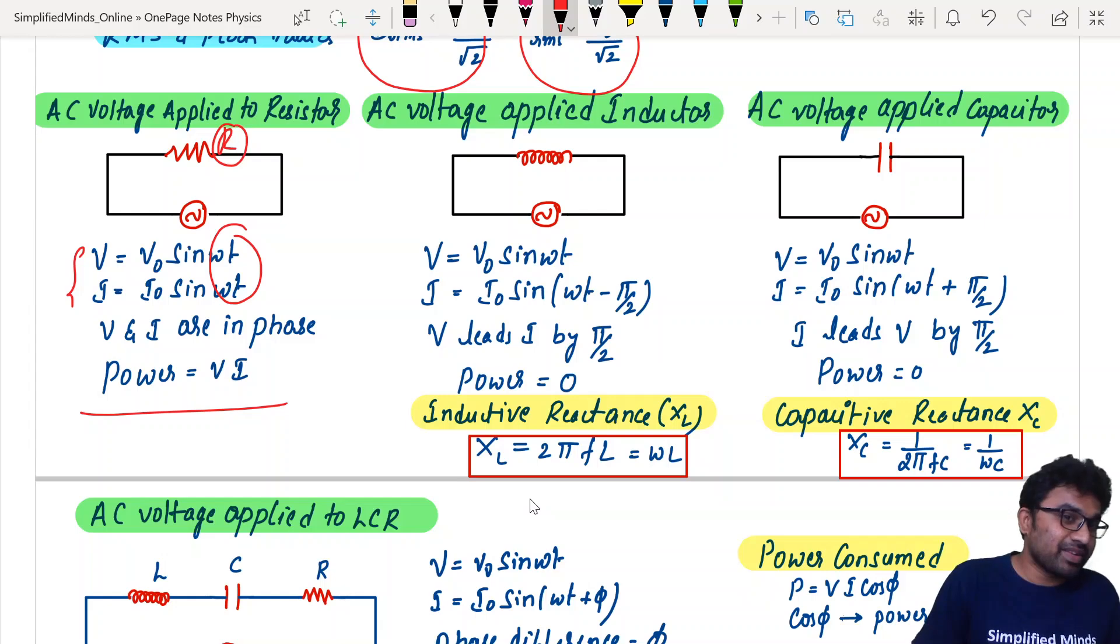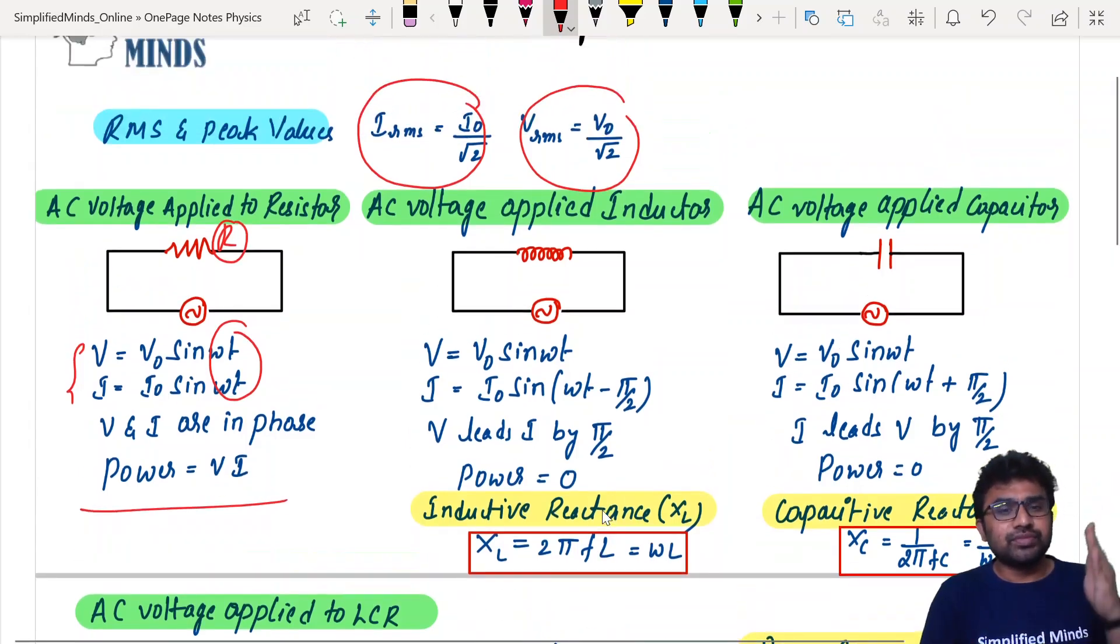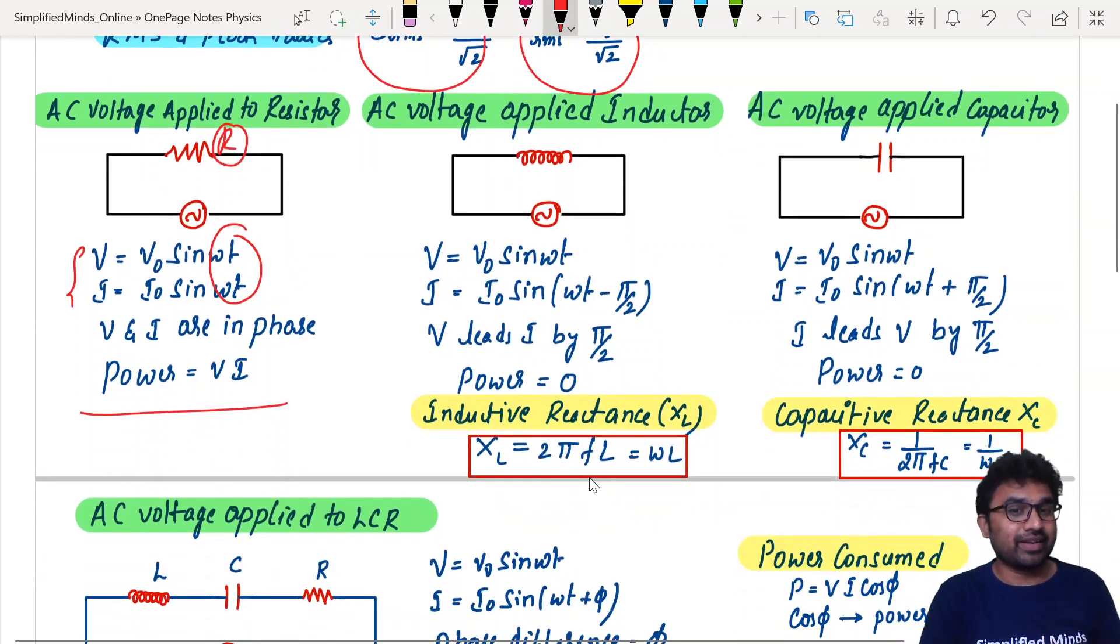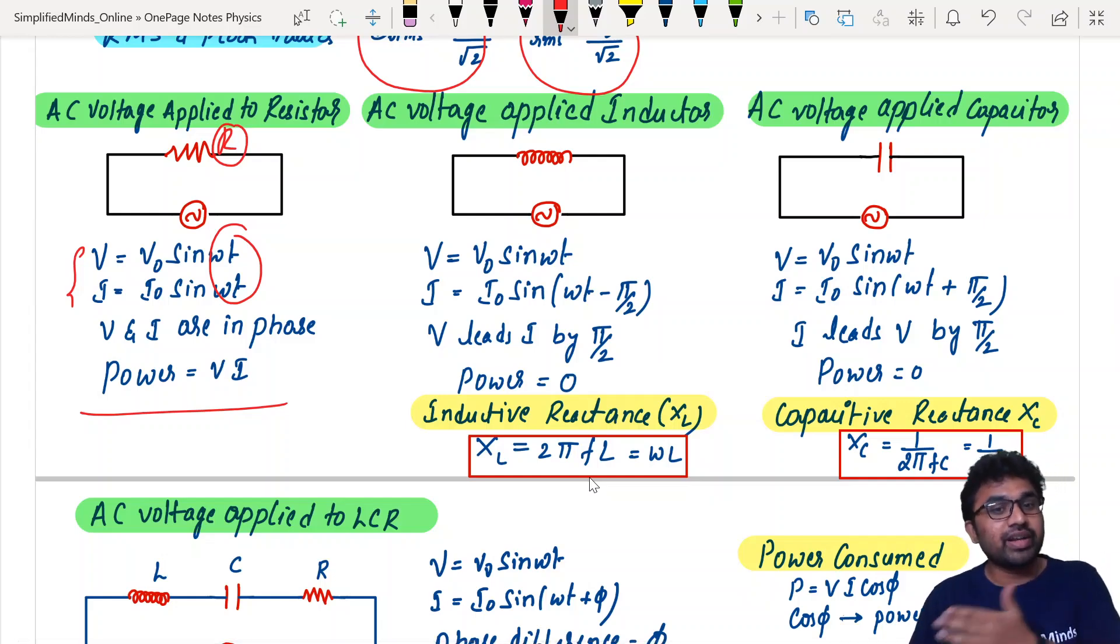I will do that in that video also. Don't worry. And then coming to AC voltage applied to inductor. V is equal to V0 sin omega t. I is equal to I0 sin omega t minus pi by 2. Voltage leads current by pi by 2. This derivation is very important for the board and all, but you just have to know the formulas.